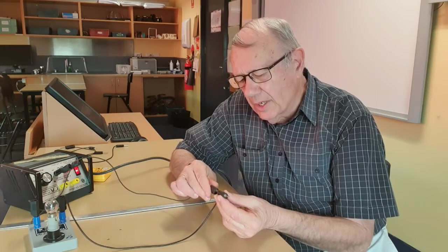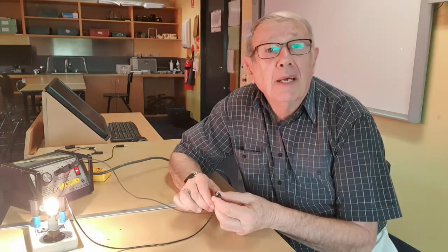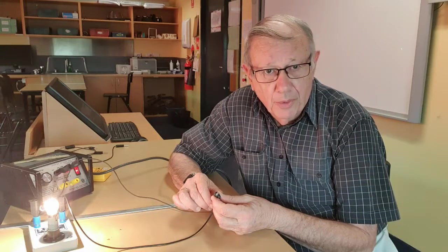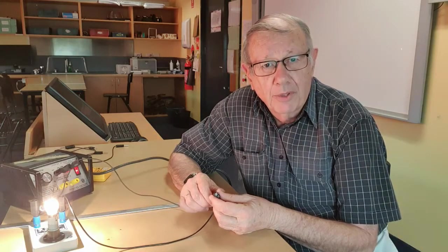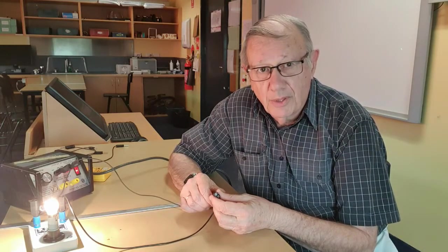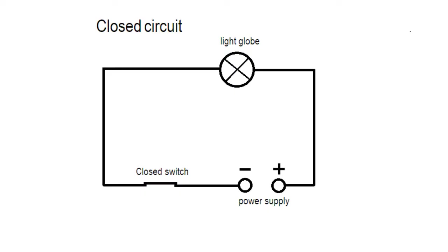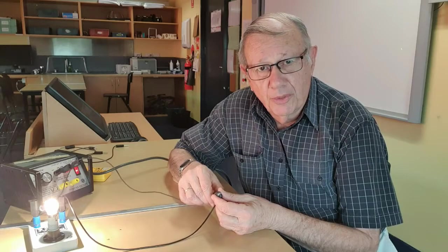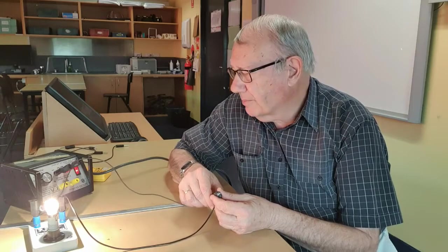Once I do connect these and the current does go through, I've got what's called a closed circuit. This is what a closed circuit means — it means that the current can flow through the circuit.